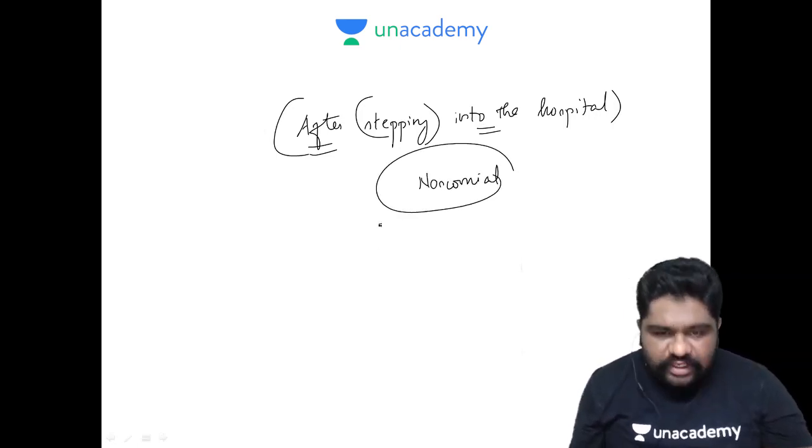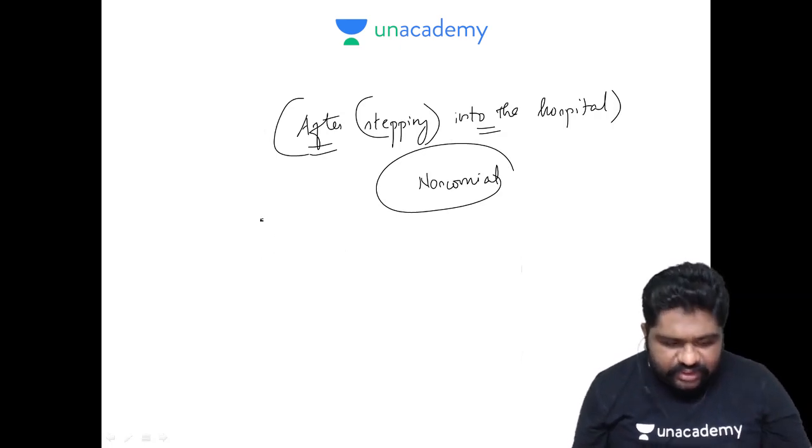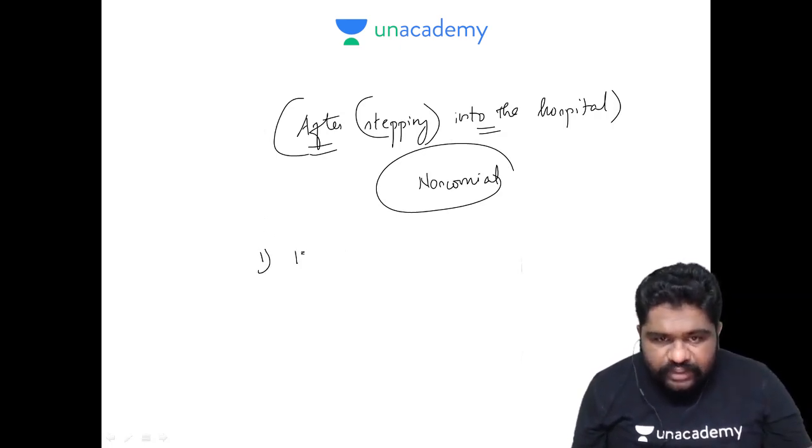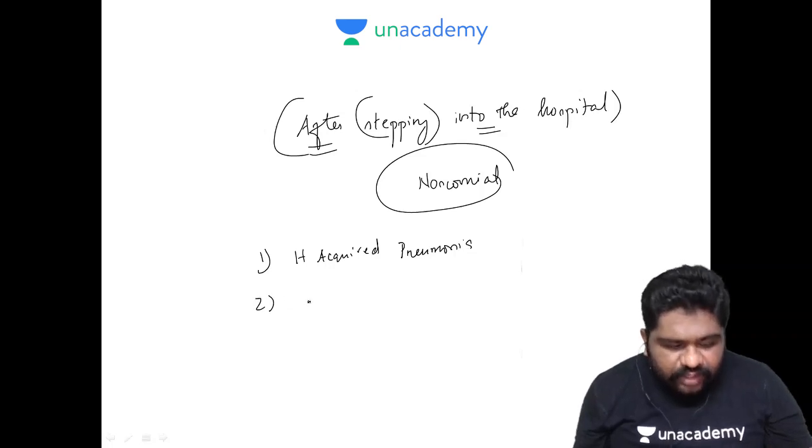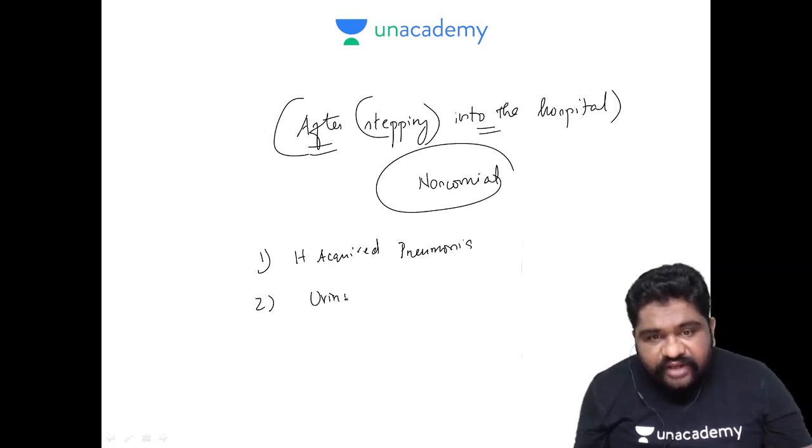Nosocomial infections can be of multiple types. First, Hospital Acquired Pneumonia. Second, Urinary Tract Infections.